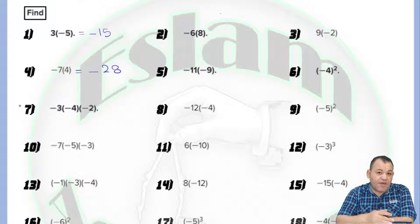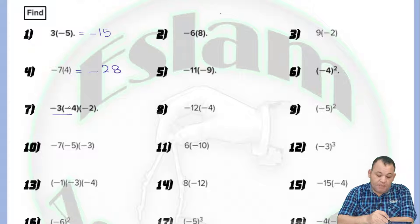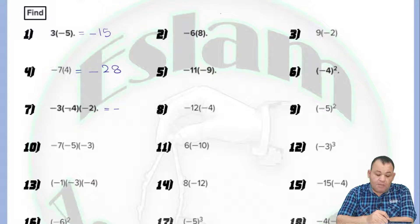In question number 3, we have three numbers. If you have more than two numbers, first just multiply two numbers at a time. Negative times negative equals positive. Then multiply positive times negative, and the answer will be negative. Just count the negative signs: negative times negative is positive, then positive times negative will be negative.